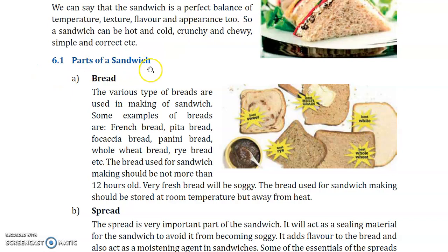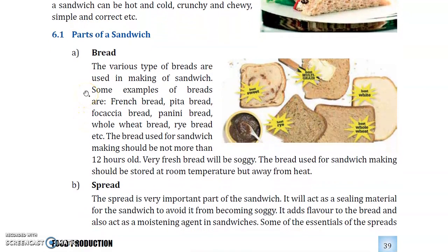The first and most important part of a sandwich is the bread, which wraps around the food material. Various types of breads are used in making sandwiches. Some examples of bread are French bread, pita bread, focaccia bread, panini bread, whole wheat bread, and rye bread.